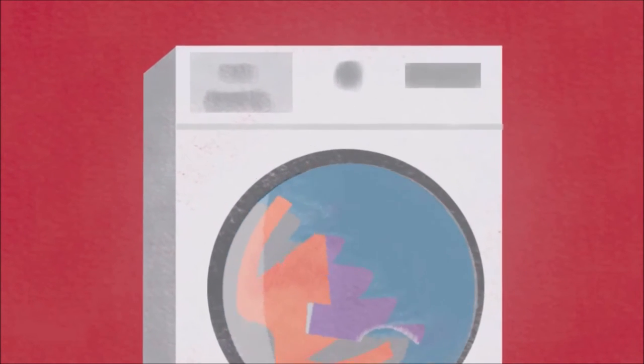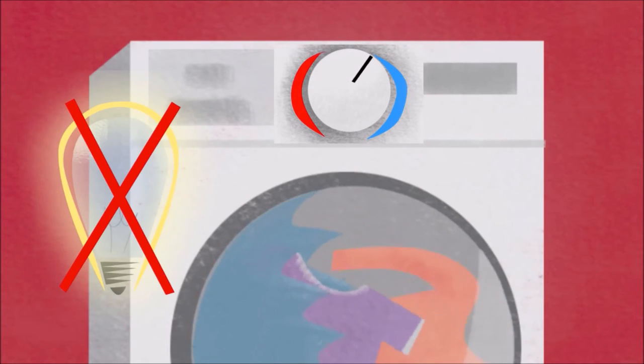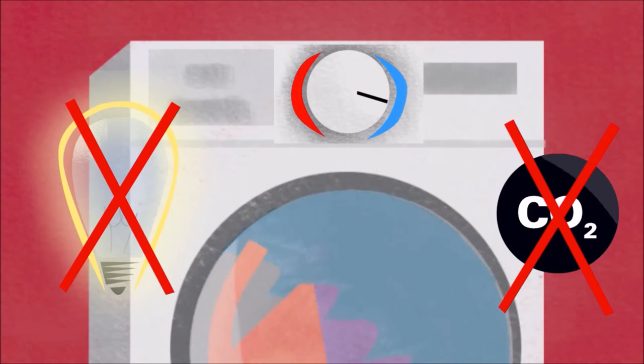The answer is that using a washing machine on a cold setting prevents electricity being used to heat the water, and so minimises the carbon footprint for each wash cycle.